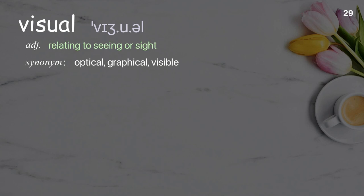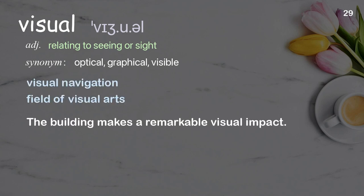Visual: relating to seeing or sight. Examples: visual navigation, field of visual arts. The building makes a remarkable visual impact.